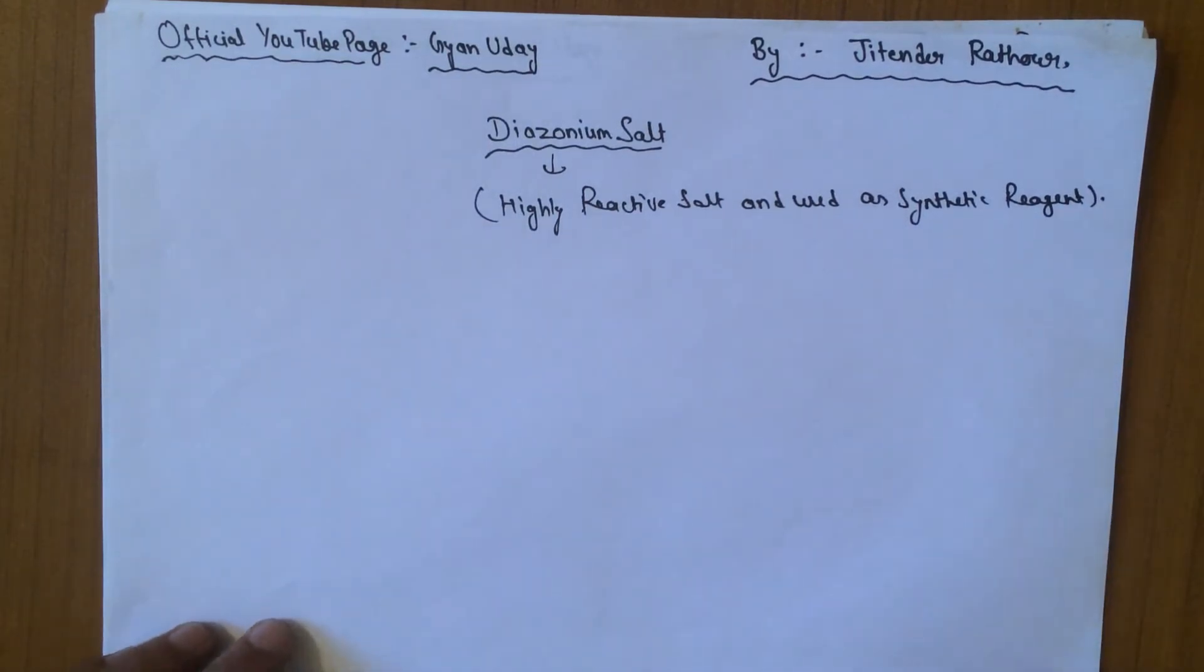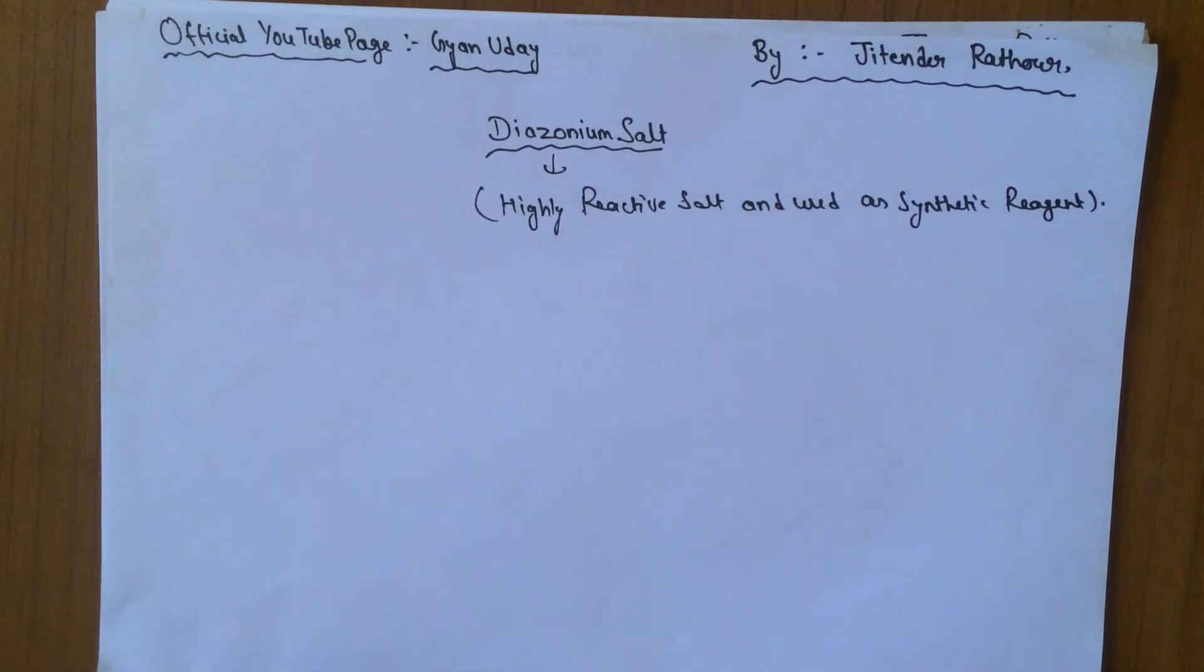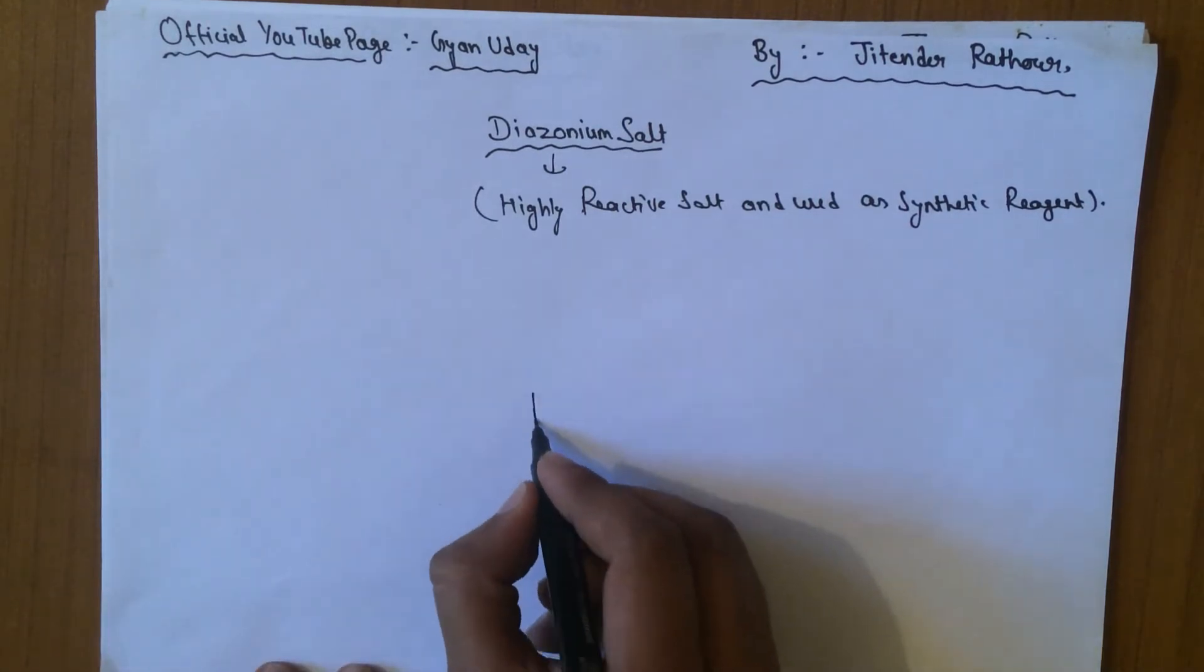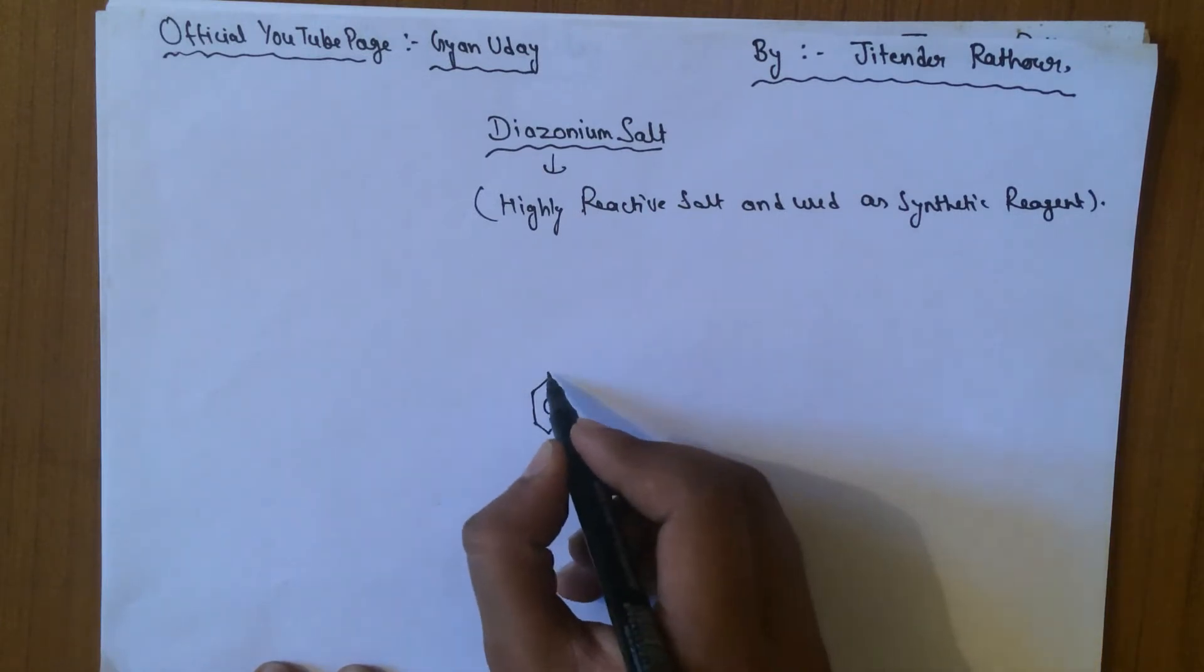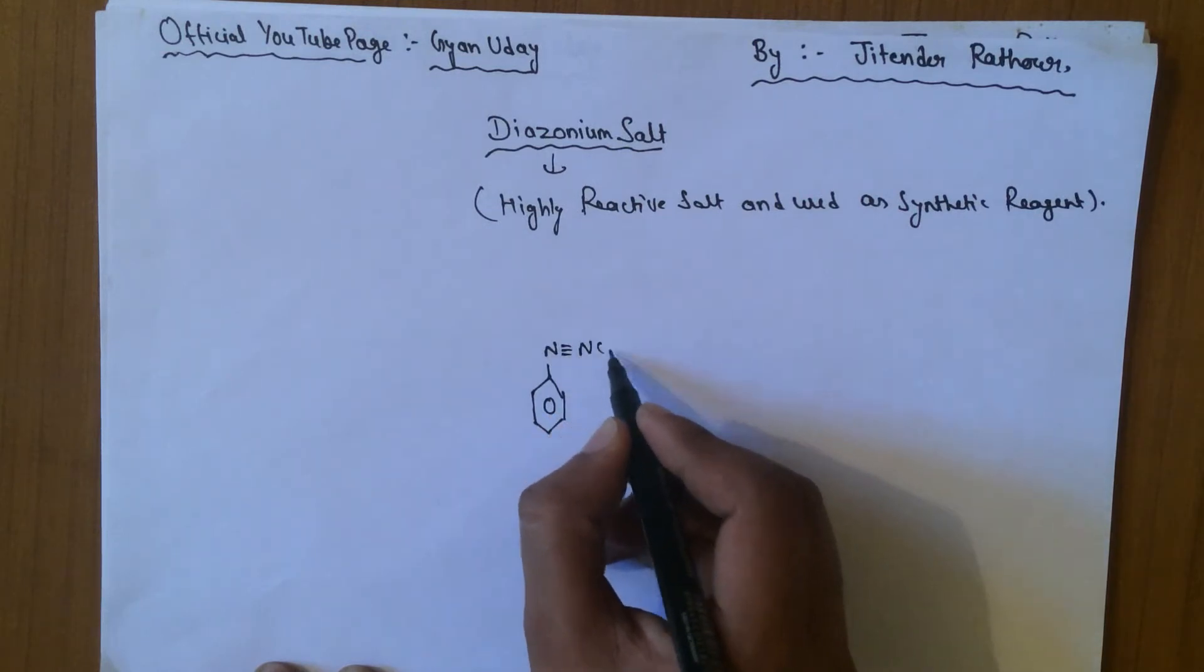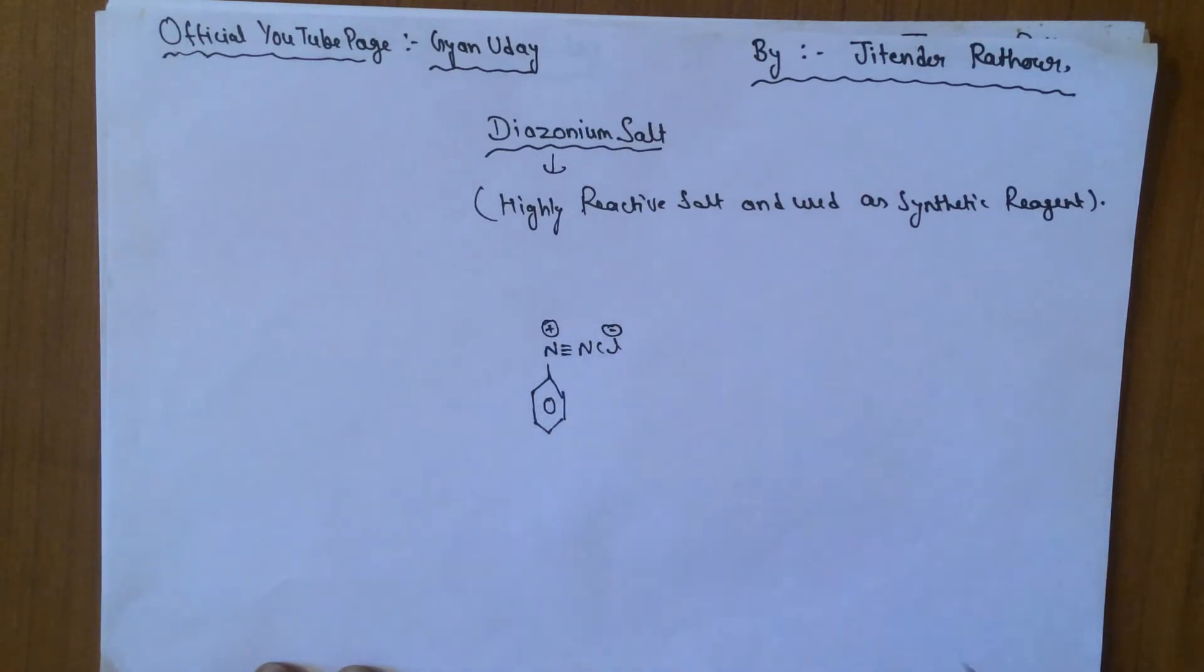There are various reactions of diazonium salt which is shown by the network structure like a cyclic and triple bond and Cl, the negative charge over the chlorine and the positive charge over the nitrogen.